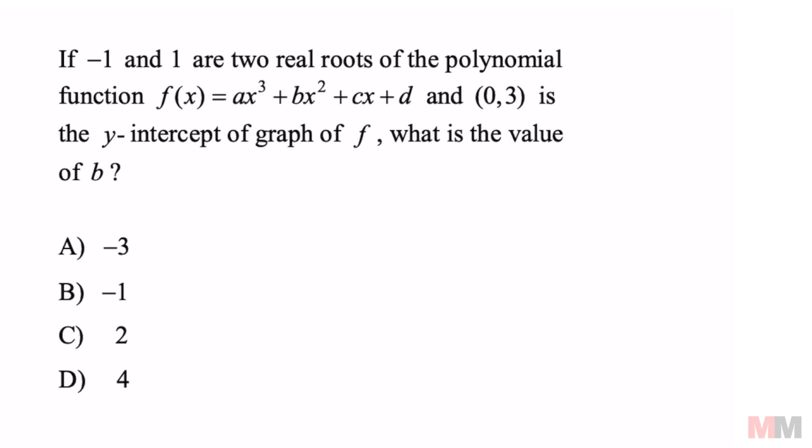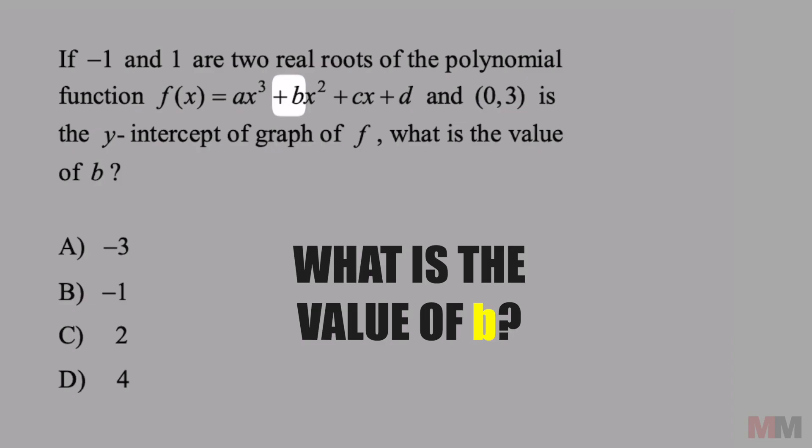If negative 1 and 1 are two real roots of the polynomial function, which is this, and (0,3) is the y-intercept of the graph f, what is the value of b?